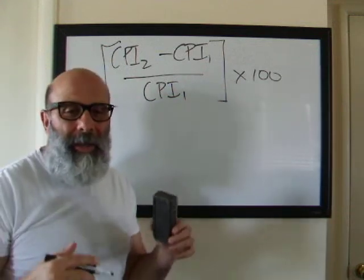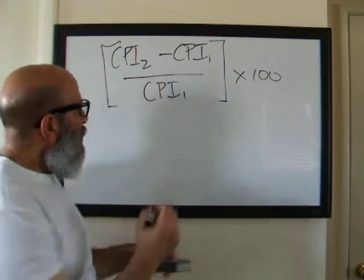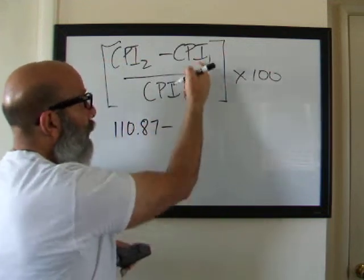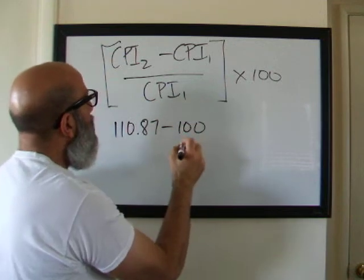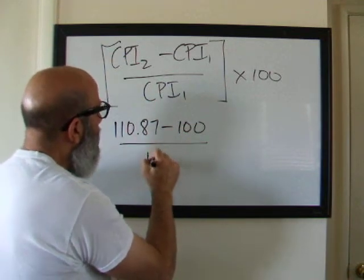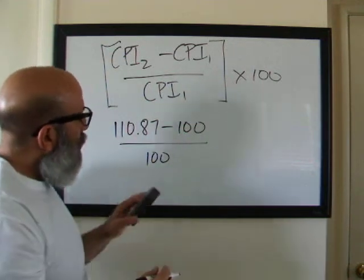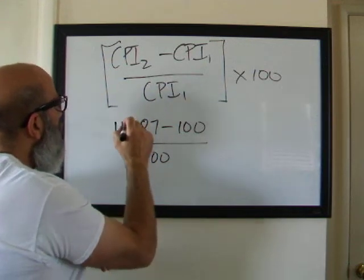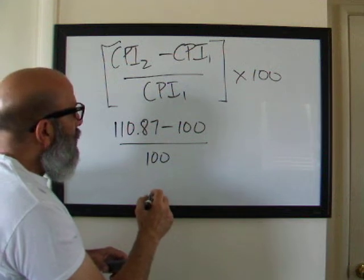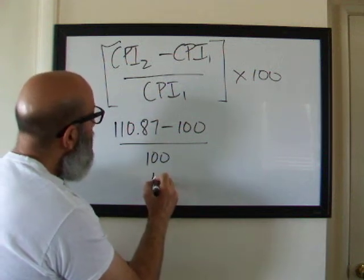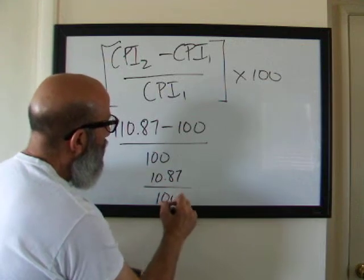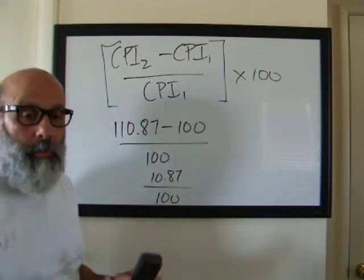Okay, so CPI 2 I think was 110.87. CPI 1 our base year is going to be 100 and I'm going to divide that by 100. So I think I can fit it down here. So that's going to give me 110.87 over 100. I hope that that's okay with you guys.